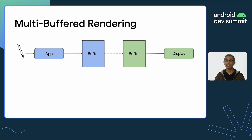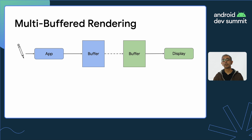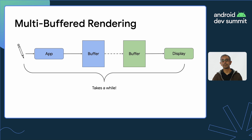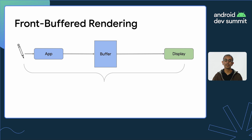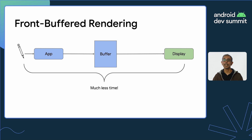Multi-buffered rendering starts with input, which goes to the app. This is written to a buffer, and this buffer is passed around to another part of the OS. This part of the OS then actually displays it on the screen and renders out the pixels. This can take a little bit of time. There is another way to do this called front-buffered rendering. Front-buffered rendering has the app writing to the same buffer that the display is reading from, and this takes much less time. This is the ideal way to render for stylus input.